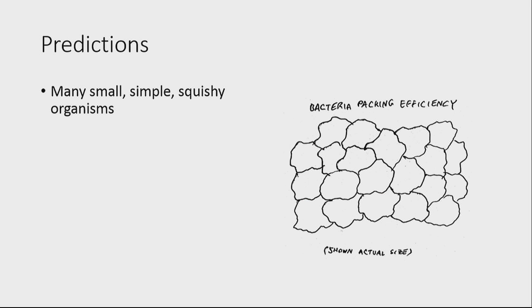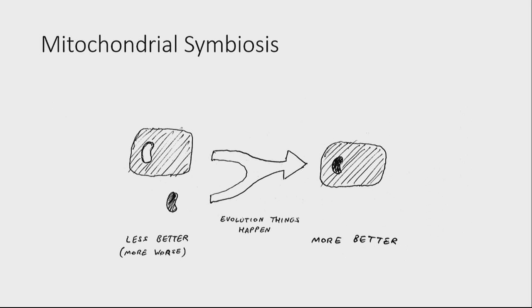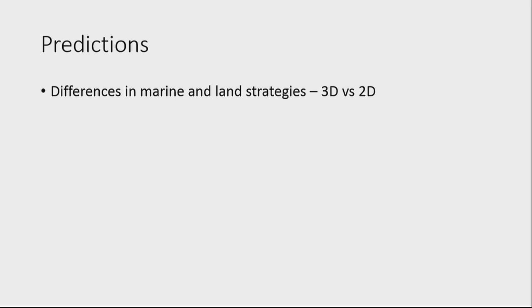So what predictions does this theory make? Well, to start with, we'd expect the dominant life on Earth to pack very well — we'd expect something small, squishy, and very simple, like bacteria. This theory also explains why early eukaryotic cells became symbiotic with mitochondria. If we imagine the early eukaryotic cells had just some mitochondria-shaped holes in them, and there were some mitochondria floating around — just put them in, sure, why not? Another prediction is we'd expect to see different shapes evolve in the ocean compared to on land, because it makes sense for land animals to optimize their packing efficiency in two dimensions, whereas marine animals should logically pack in 3D. And just qualitatively speaking, we do see very different shapes evolving in the sea compared to on land.